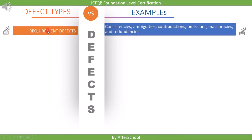The first defect type is requirement-related. For example: inconsistencies, ambiguities, contradictions, omissions, inaccuracies, and redundancies in the requirements.